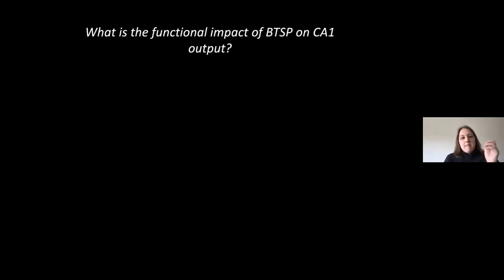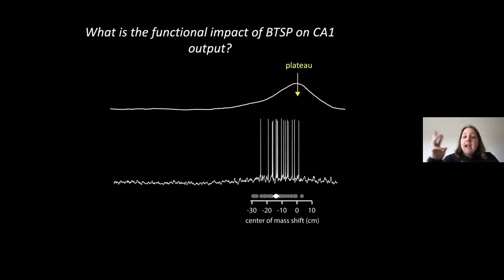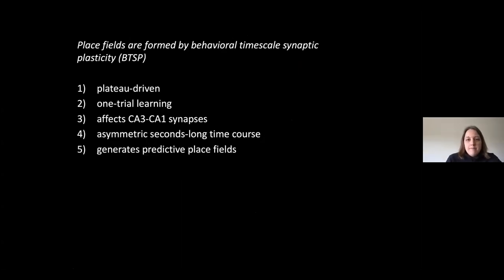You might have noticed that in the example I showed you, the ramp is kind of asymmetric actually, and this is due to the asymmetry in the plasticity time course. This has an interesting functional consequence for the CA1 output, namely that place field firing that comes out of the CA1 area always precedes the plateau that generated it. You see here's the place field firing, this is the plateau. On average, the peak firing precedes the plateau by about 10 centimeters. We conclude from this that BTSP in fact produces place fields that are predictive of the event that generated it. I find this very interesting to think about what could be the behavioral consequence of this.